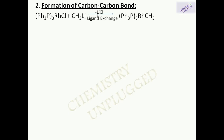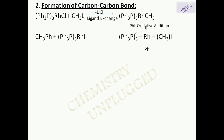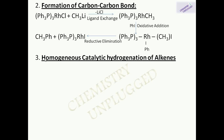The next use is formation of carbon–carbon bonds. In this reaction we use Wilkinson's catalyst and methyllithium. In the first step, ligand exchange occurs — Cl attaches to lithium and is removed as LiCl. In the next step, phenyl iodide undergoes oxidative addition, and both Ph and I attach to the complex. Then reductive elimination occurs, CH₃ and Ph are removed, and a new carbon–carbon bond is formed.